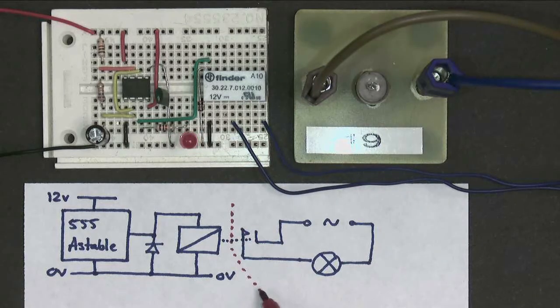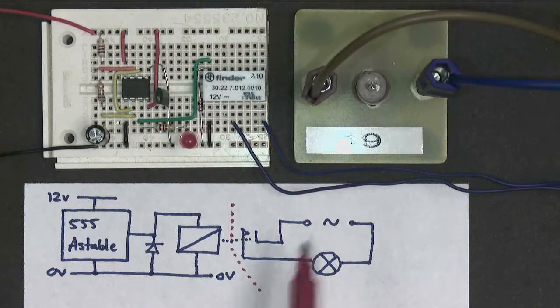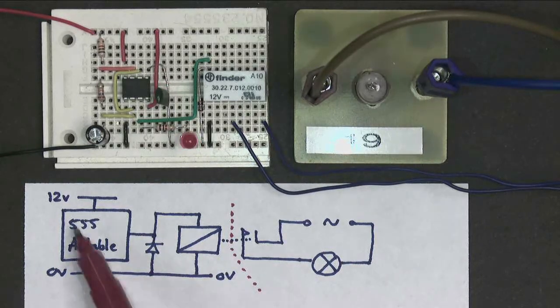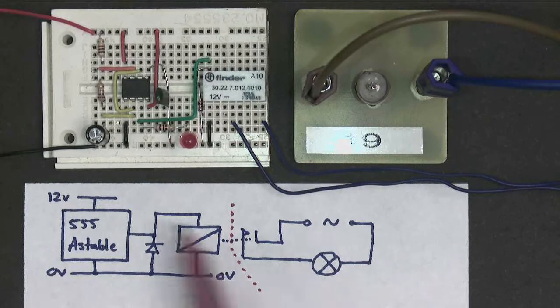This red line shows that they are electrically separate. This circuit on this side is completely separate from the control circuit on this side. Different voltage, this one's AC, this one's DC.